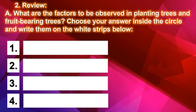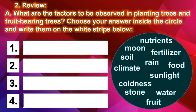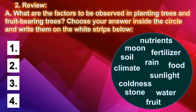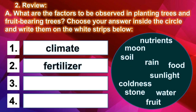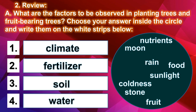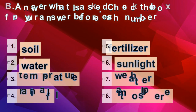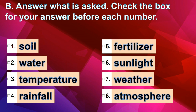To be observed in planting trees and fruit-bearing trees, choose your answer inside the circle and write them on the white strips below. Answer what is asked. Check the box for your answer before each number.